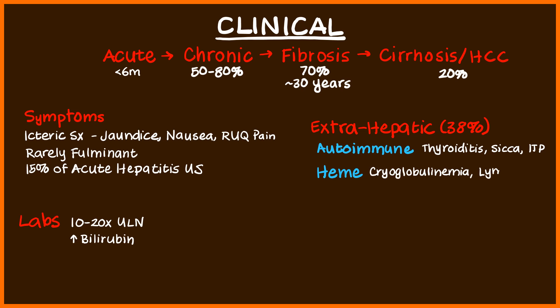Cryoglobulinemia can go on to develop lymphomas, specifically B-cell non-Hodgkin lymphomas like diffuse large B-cell lymphoma. Because of this association, it is sometimes reasonable to test patients with lymphoma for hepatitis C. Renal diseases can also occur — again, due to immune complex deposition — such as membranoproliferative glomerulonephritis. Dermatological conditions include lichen planus and porphyria cutanea tarda. Diabetes mellitus can occur as well, because the virus can trigger an inflammatory reaction in the pancreas. There are several more autoimmune and extrahepatic manifestations, and whenever you see a patient presenting with these, it's important to test for hepatitis C as the underlying cause.